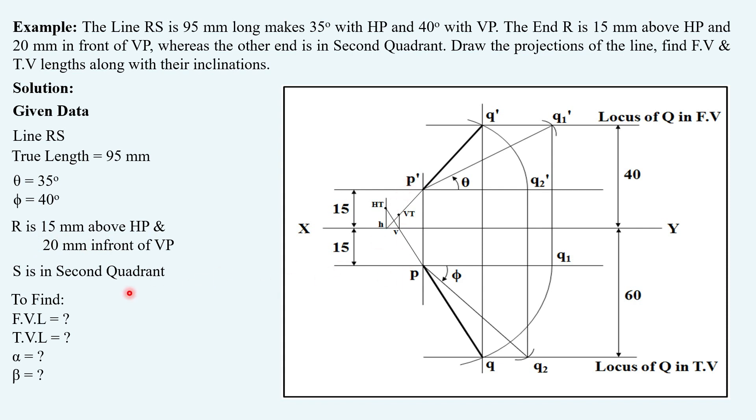S is in second quadrant. According to the second quadrant, both front-view and top-view of the line should be above XY. So here, the front-view locus will be accordingly,